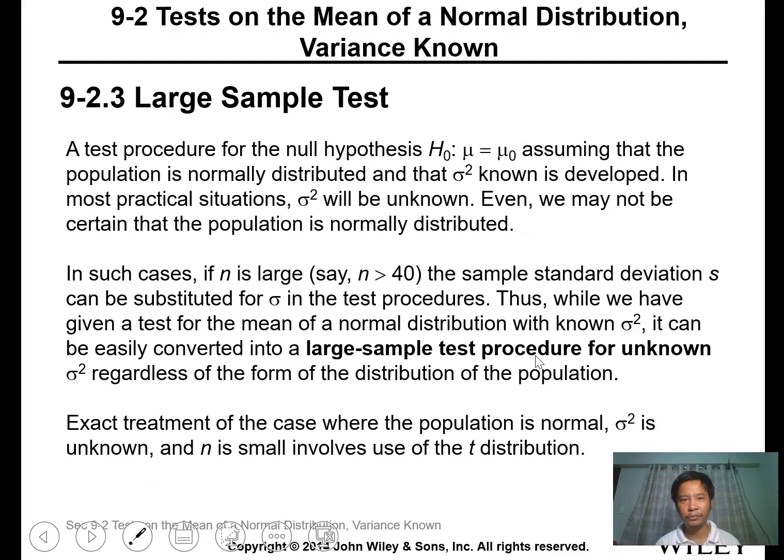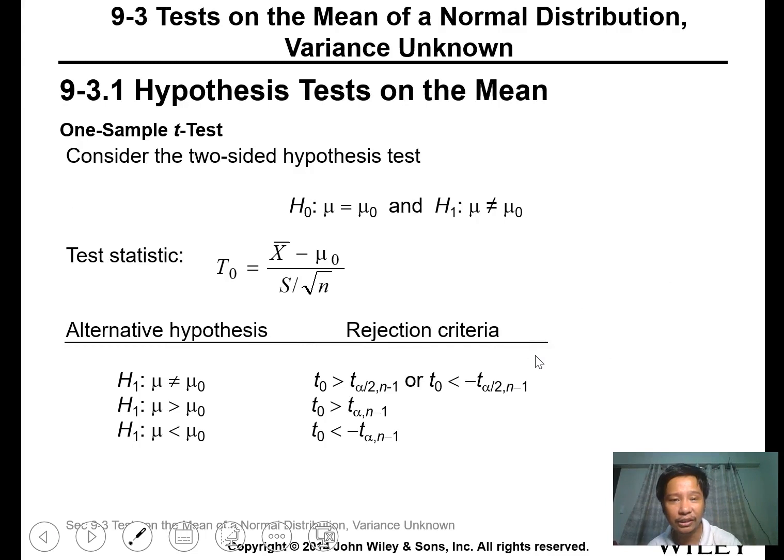Now, another test we can do for very large samples with unknown variance is the t-test instead of the z-test. The t-test is almost the same as the z-test, but instead of the standard deviation of the population, we use the standard deviation of the sample. This applies when your sample is large, greater than 40.